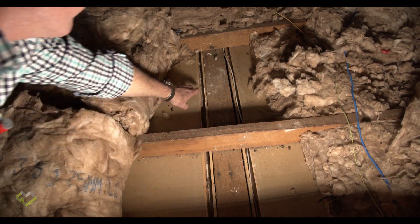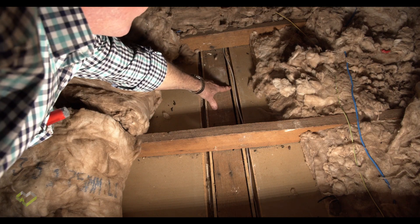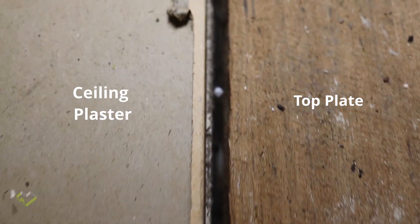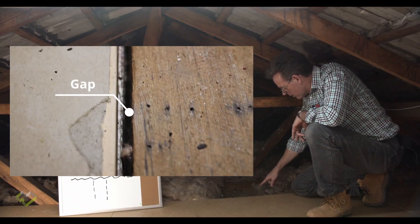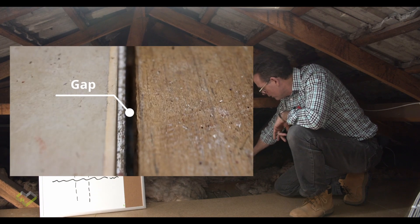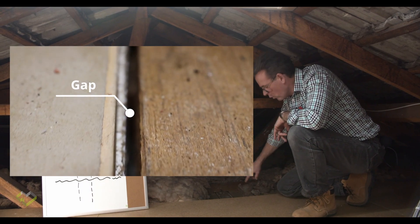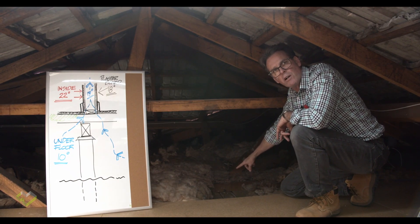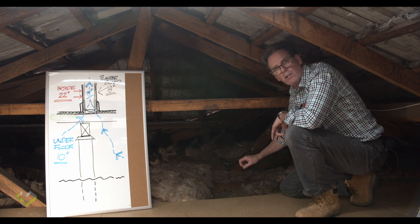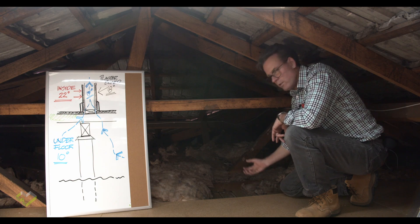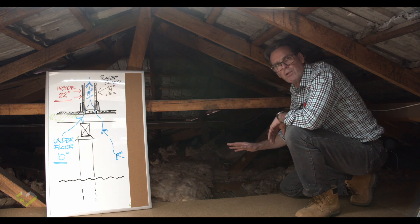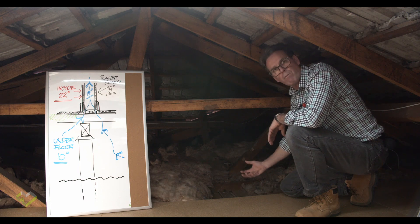We've peeled back the insulation in this roof — which is quite a well-insulated roof — but you can see the top of the wall. This is the wall of the passageway below, and either side of the top plate you can see two, three, even five millimetre gaps all the way along the top of this wall. That's the sort of gaps that are allowing the cold air from the subfloor to infiltrate straight up through the walls into this roof space.